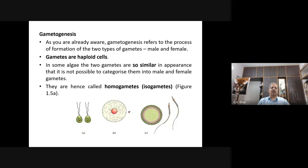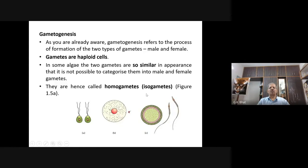In some algae, the two gametes are so similar in appearance that it is not possible to categorize them into male and female gametes. These are the two gametes you have in some algae — if asked which is male and which is female, it is not possible to tell at all. They are similar in their appearance. They are hence called homogametes or isogametes. Here iso means similar, homo means similar. These are the two homogametes as you see in some algae.